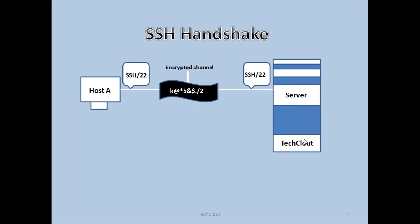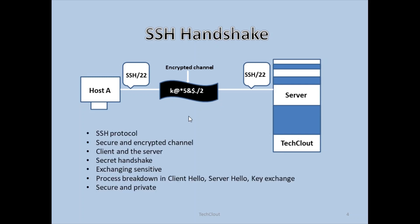Now let's see the SSH handshake. Here on the screen you can see there is a Host A and a server called Tech Cloud. They are communicating over SSH, which uses port number 22, over a secure encrypted channel. Every data they are sharing is encrypted — in other words, in an unreadable format. They follow the SSH protocol which forms a secure and encrypted channel for communication between a client and the server.